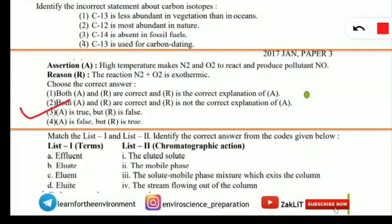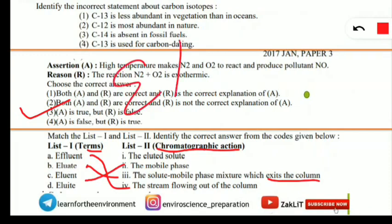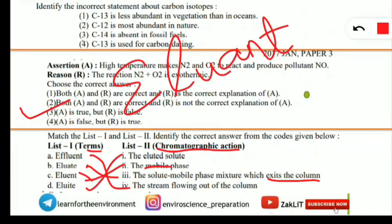A match-the-following on chromatographic terms: Effluent — the stream flowing out of the chromatographic column. Eluate — the solute-mobile phase mixture that exits the column. Eluant (also called eluent) — the mobile phase in the chromatography process; both terms mean the same thing. Eluite — the eluted solute.